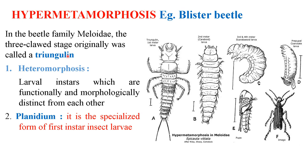Heteromorphosis refers to larval instars which are functionally and morphologically distinct from each other. Planidium is the specialized form of first instar larvae. The triangulin is a first instar larva which is specialized — therefore, triangulin is a planidium.